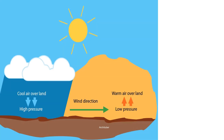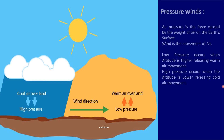Now discussing about wind and pressure. Where there is high pressure, there is cool air, and where there is low pressure, there is warm air. Air pressure is the force caused by the weight of air on the earth's surface, and wind is the movement of air. Low pressure occurs when the altitude is higher, releasing warm air movement, and when high pressure occurs, the altitude is lower, releasing cold air movement.